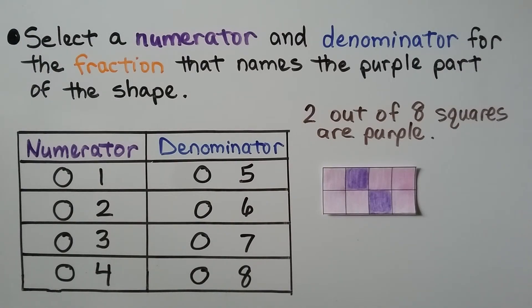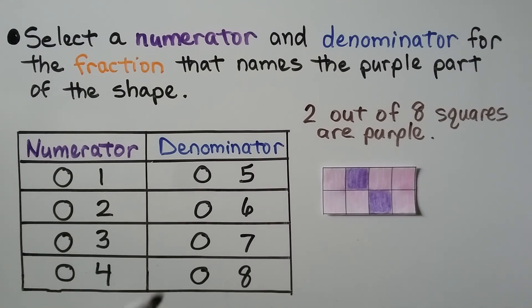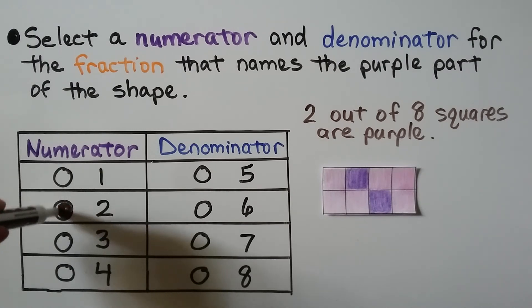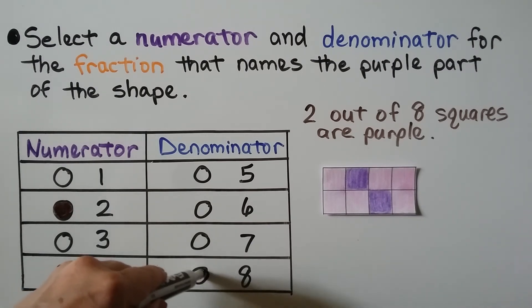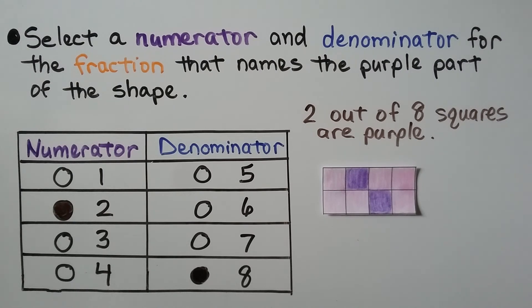Select a numerator and denominator for the fraction that names the purple part of the shape. Here's a list of choices for the numerator, and here's a list of choices for the denominator. We're going to fill in the circle for the correct numerator, then fill in the circle for the correct denominator. We can see two of the eight squares are purple — that tells us the numerator is two. There are eight squares in all, so the denominator is eight. We fill in the circle for eight completely, just like when you're taking a test. Two out of eight squares are purple — it's two-eighths.